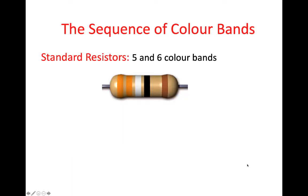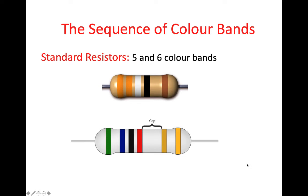Looking at resistors with five and six colour bands — this is a photo of a five-band resistor, but I'll show a diagram of a six-band to highlight something. We have our resistance values here, and for the five-band resistor, the resistance is represented by the first four colour bands. Then the fifth band represents the tolerance. And the sixth band represents the temperature coefficient.